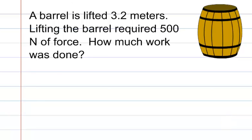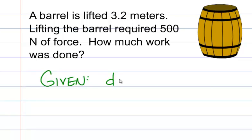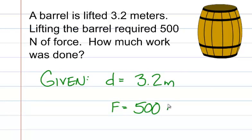Let's go through the GUESS method like we've done with all of these problems. First, we're going to write down the given. In this case, we know there are 3.2 meters — so 3.2 meters is a measurement of distance. We also know that 500 newtons of force was applied, so we have 500 newtons of force.